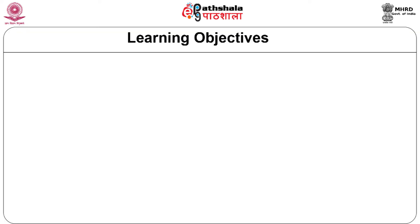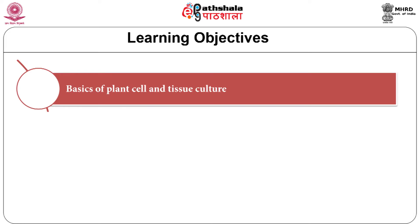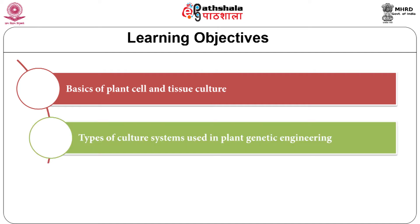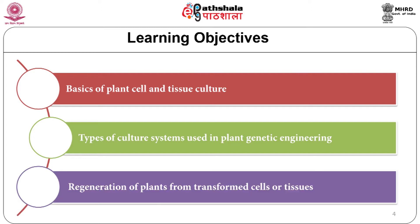The learning objectives for this module are: basics of plant tissue culture, in which we shall study the preparation of plant material for culture, the growth media used, and the environmental conditions under which the cultures are maintained; types of culture systems used in plant genetic engineering, in which three main types — protoplast cultures, callus cultures, and tissue cultures — will be dealt with; and regeneration of plants from transformed tissues, where we will see how plants are regenerated via organogenesis or embryogenesis.